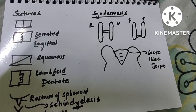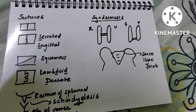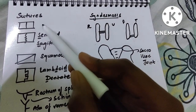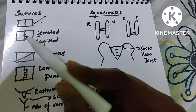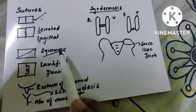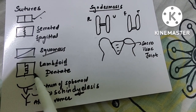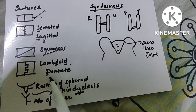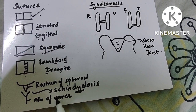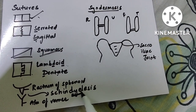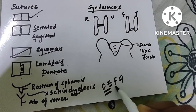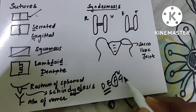Fibrous joints divide into sutures, gomphosis, and syndesmosis. Sutures come in different types: simple suture, serrated (example: sagittal suture for S), squamous (squamo-temporal suture), and lambdoid — two D's, so it is dentate. The sphenoidal rostrum and ala of vomer form the sphenoidal-vomerine joint, which is syndialysis.